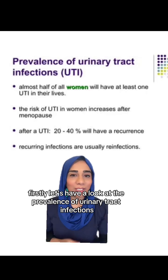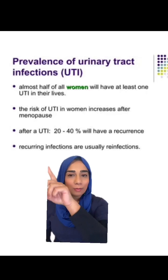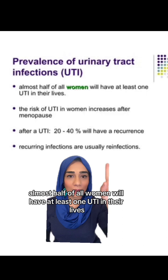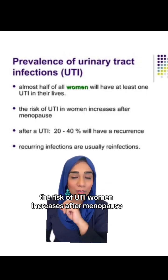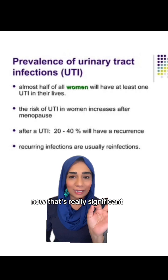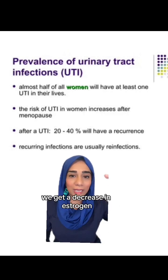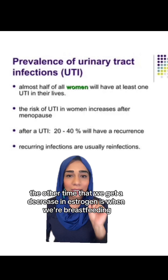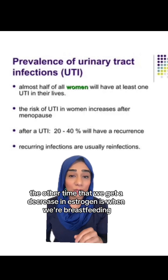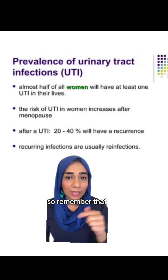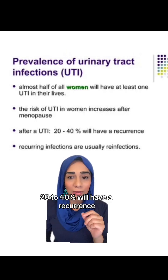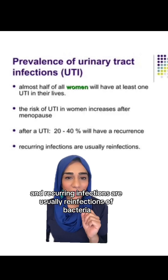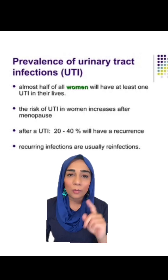Firstly, let's have a look at the prevalence of urinary tract infections. Almost half of all women will have at least one UTI in their lives. The risk of UTI in women increases after menopause. That's really significant because when perimenopause happens, we get a decrease in oestrogen. The other time we get a decrease in oestrogen is when we're breastfeeding — remember that because I'll come back to it. After having a UTI, 20 to 40 percent will have a recurrence, and recurring infections are usually reinfections of bacteria.